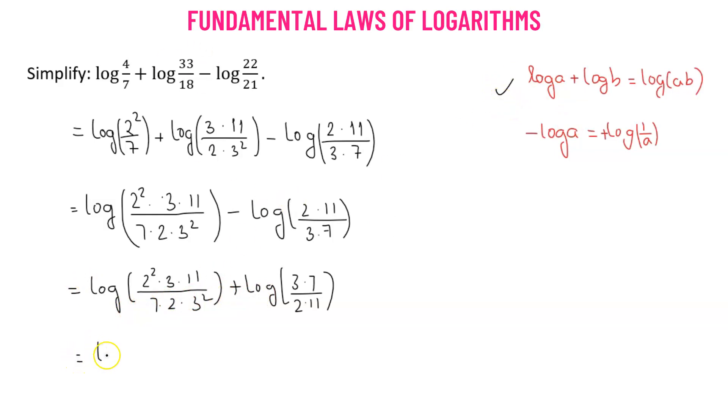We get log of 2 squared times 3 times 11 times 3 times 7, divided by 7 times 2 times 3 squared times 2 times 11.